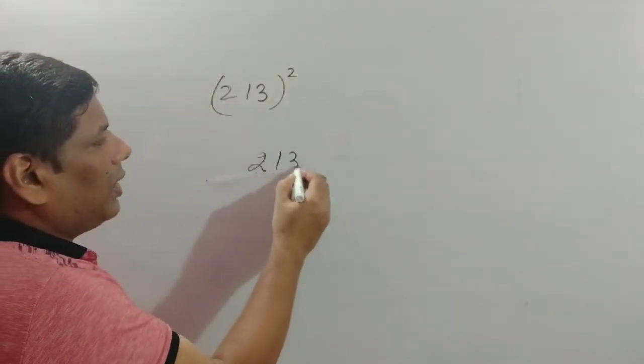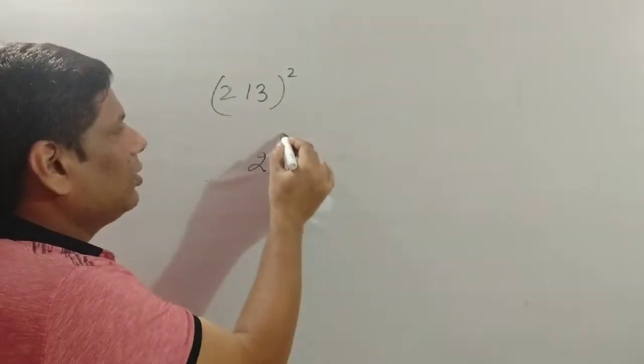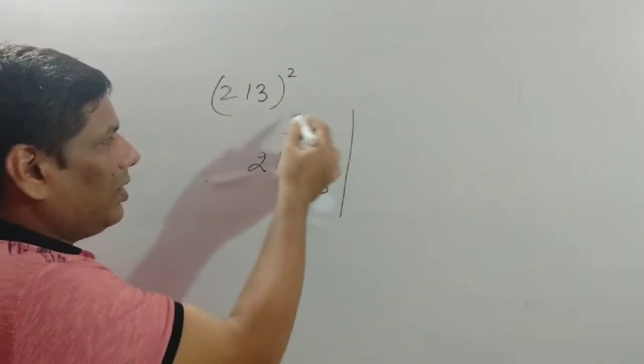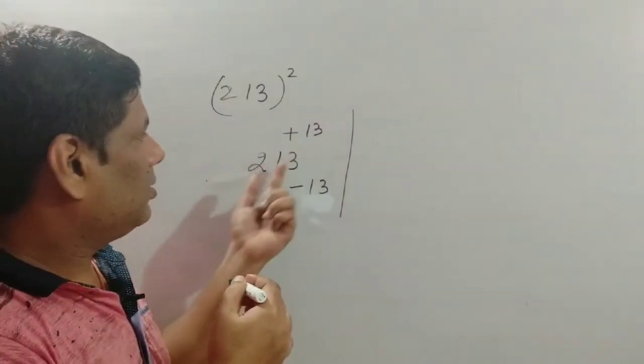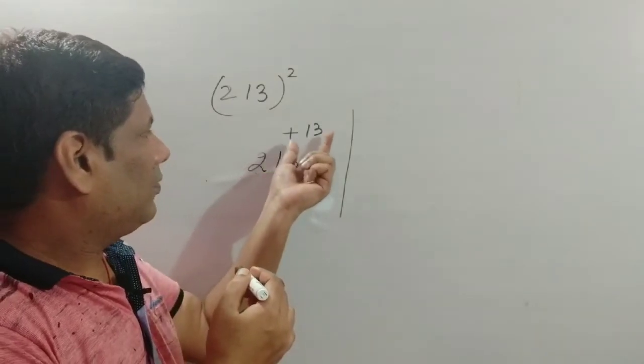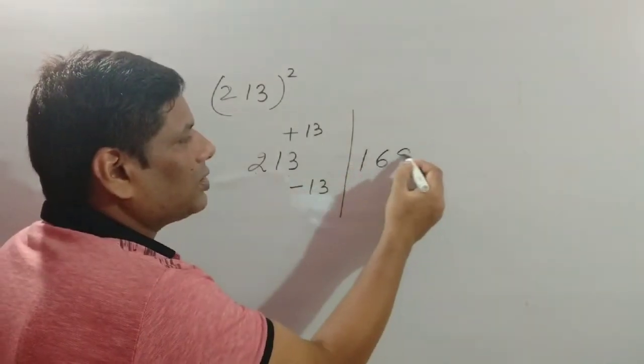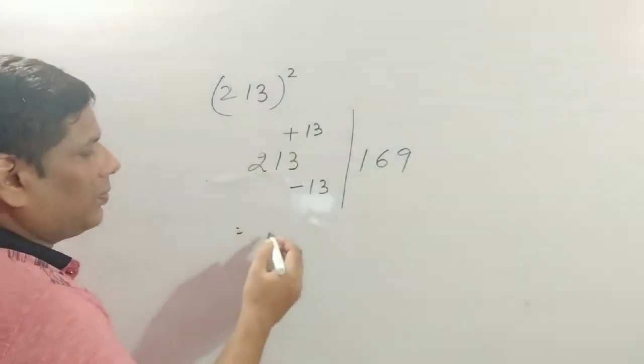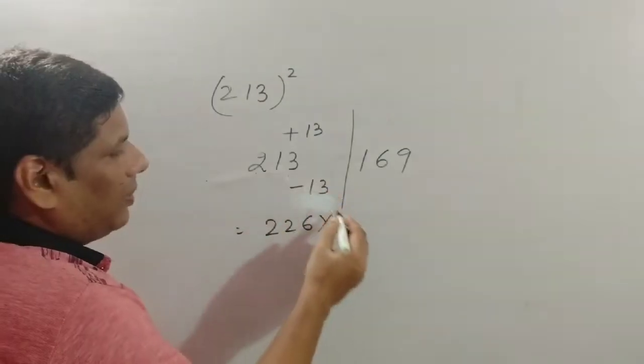Write 213, and how far is it from 200? That is 13. So write plus 13 here and minus 13 here. The difference between 213 and 200 is 13, so we need 13 squared.